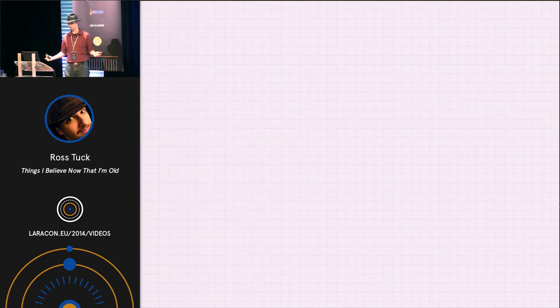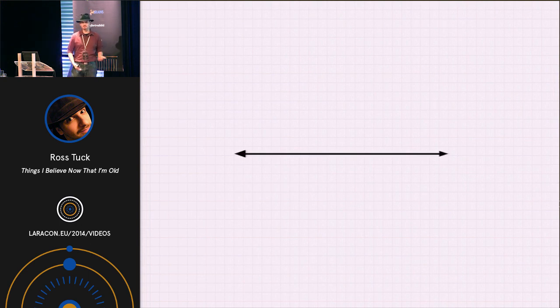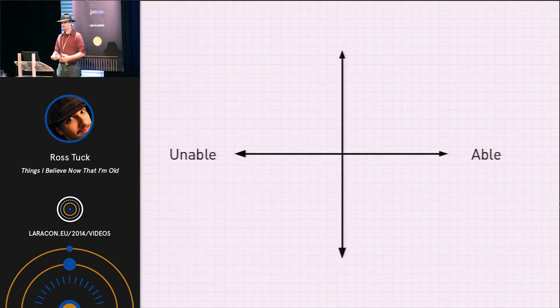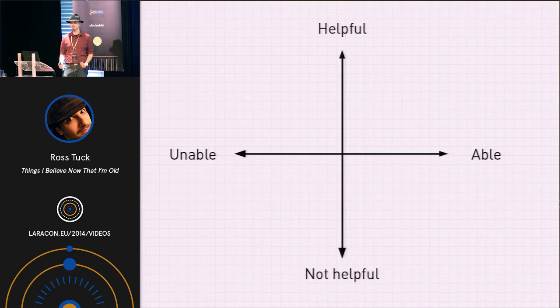I like to do this in sort of a chart or a graph. On the one axis, you have the capability of the person. Like, what kind of knowledge level do they have? Are they experts in the field? On the other axis, you have how sympathetic the person is. Are they helpful to you? Are they invested in you?